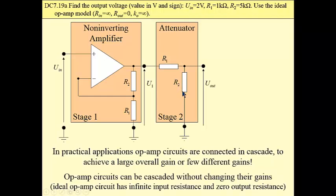In practical applications, op-amp circuits are connected in cascade to achieve a large overall gain or a few different gains like here. We have a gain between U_input and U_1. This is one gain.